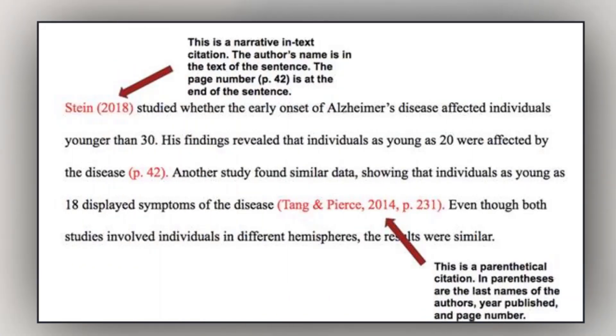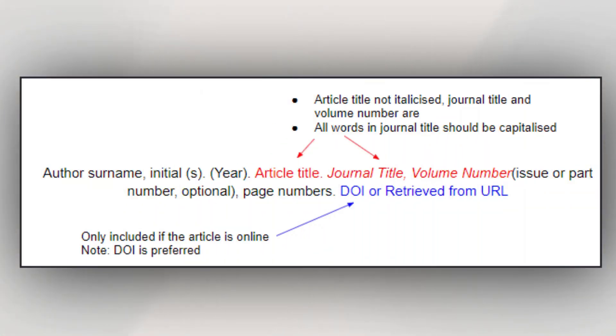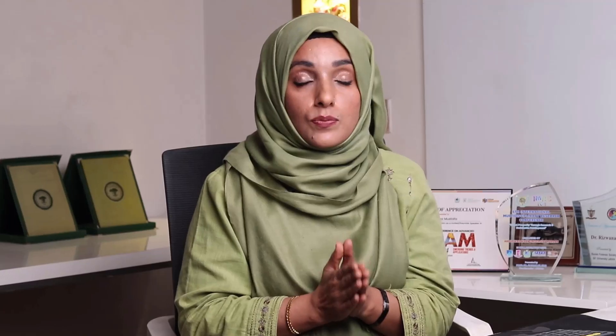Citation mostly consists of the name of the author and the year, or it can be in the form of numbers. The reference includes the name of the author, the title of the paper, the year of publication, issue, volume, and number of pages. In APA style, you also have to provide the DOI link of that specific research paper or document you are using as a reference.